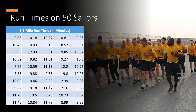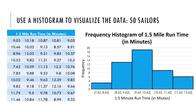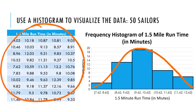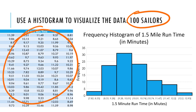I'd like to visualize this data better. To visualize the 1.5 mile run times, I created a histogram. Do you notice that bell shape in this histogram? Remember that I said I used the normal distribution random number generator to create this data. Suppose I had more data — now instead of 50 sailors, I have 100 sailors. I'm still using the same random number generator to create this data.